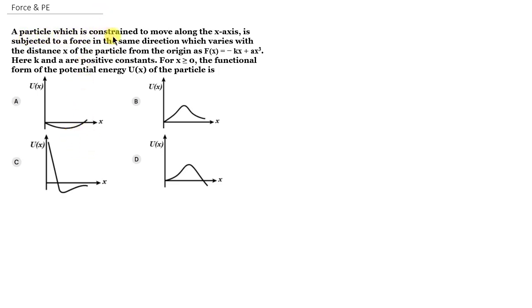The question is that a particle which is constrained to move along the x-axis is subjected to a force in the same direction which varies with the distance x of the particle from origin as F(x) equals minus kx plus ax squared. We have k and a as positive constants. For x greater than or equal to zero, find the functional form of potential energy of the particle.